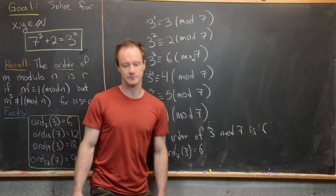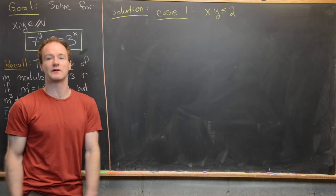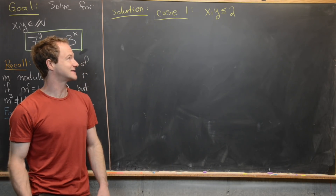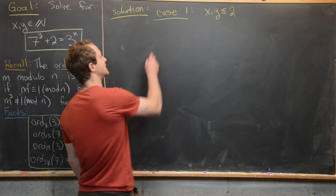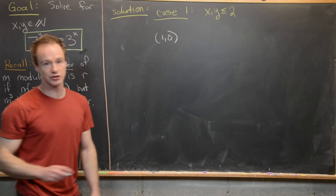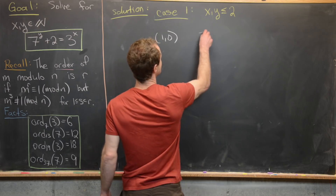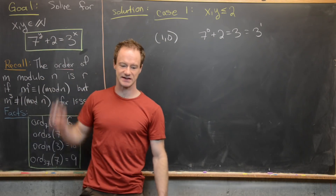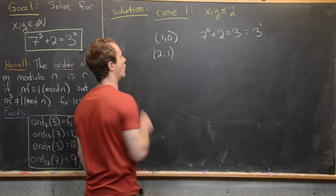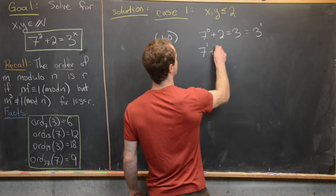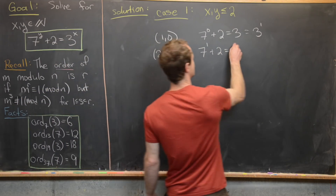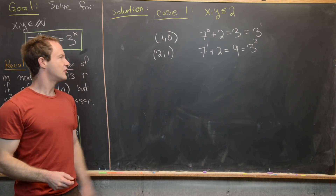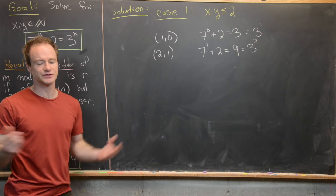Before the main solution, we check small cases where x and y are less than or equal to 2. We find that (x, y) = (1, 0) is a solution because 7 to the 0 plus 2 equals 3, which is 3 to the 1. Also, (x, y) = (2, 1) is a solution because 7 to the 1 plus 2 equals 9, which is 3 squared. You can verify there are no other solutions with x, y ≤ 2.